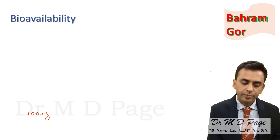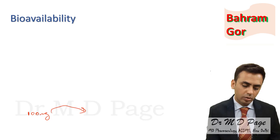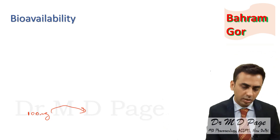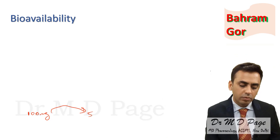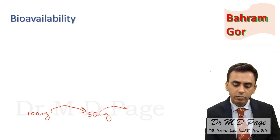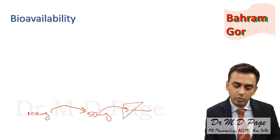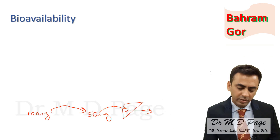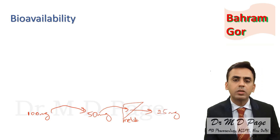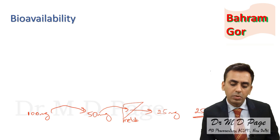Consider 100 mg of a drug given through the oral route — will all 100 mg be absorbed into systemic circulation? No, because of degree of ionization, absorptive capacity, transport mechanisms, and many other factors. So only 50 mg, for example, gets absorbed. Even then, is the whole 50 mg coming into systemic circulation? No — the drug goes to the liver and gets metabolized, so only 25 mg may actually reach systemic circulation.